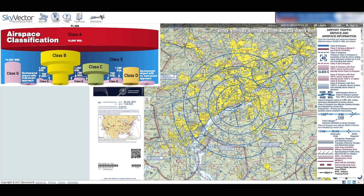Most class B airspace is covered by a TAC or terminal area chart, which is better for actual planning. However, you will most likely see several part 107 exam questions asking about details in one of those class B areas, and during the exam you will not have a user-friendly TAC to rely on.